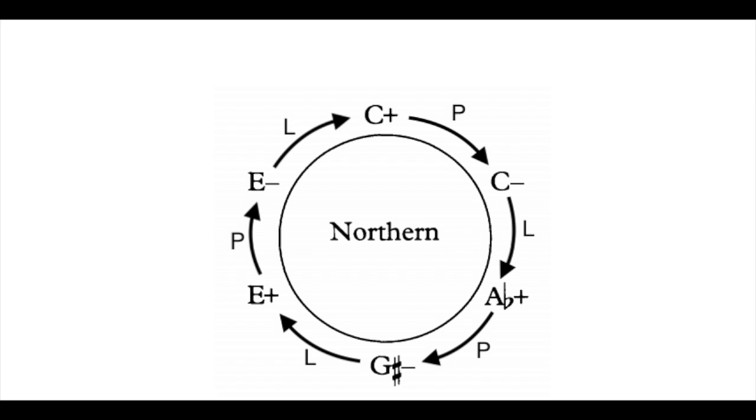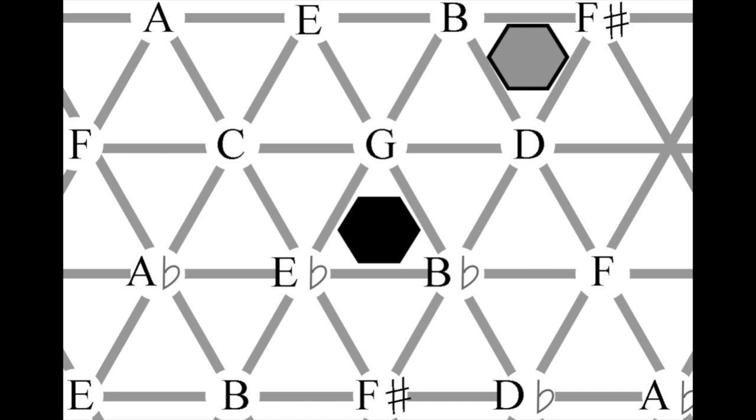C major moves E to Eb to become C minor, which moves G to Ab to become Ab major, which moves C to B to become Ab minor, which moves Eb to E to become E major, which moves G sharp to G to become E minor, which finally moves B to C to return home to C major. All movement done in semitones.